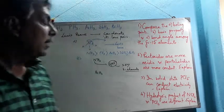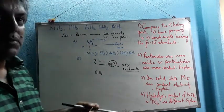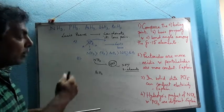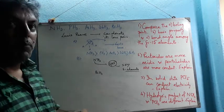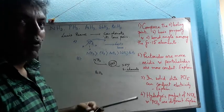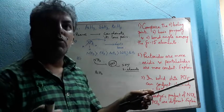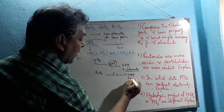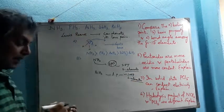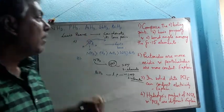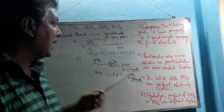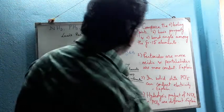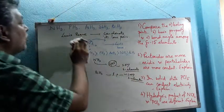As we go down the group to bismuthine, due to the very high electropositivity and large size of bismuth, no proper hybridization takes place between bismuth and hydrogen. The lone pair occupies an approximately pure s-orbital, and the bond pairs occupy approximately pure p-orbitals. Due to this high s-character (~100%), the tendency to donate the lone pair decreases greatly. Therefore, from phosphine to bismuthine, basic property decreases, confirming the same order.